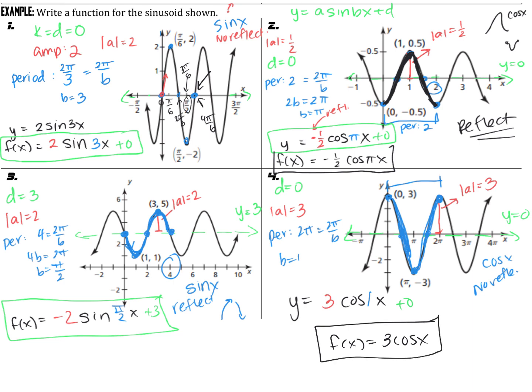Key ideas in this lesson: we identified how to write the equation of sine or cosine given a graph, specifically in the case without a horizontal shift. We identified the center to find the amplitude, which gives the D value and the absolute value of A. We plotted five key points to find the period and used the formula period = 2π/B to solve for B. Then we used those five points to decide sine or cosine and checked for reflections. Write down any questions you have — thanks for listening.